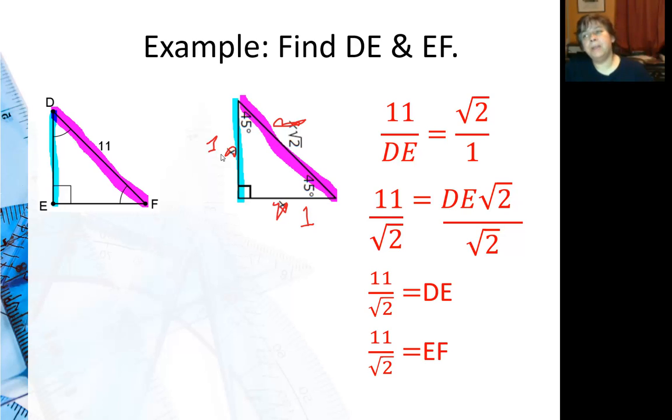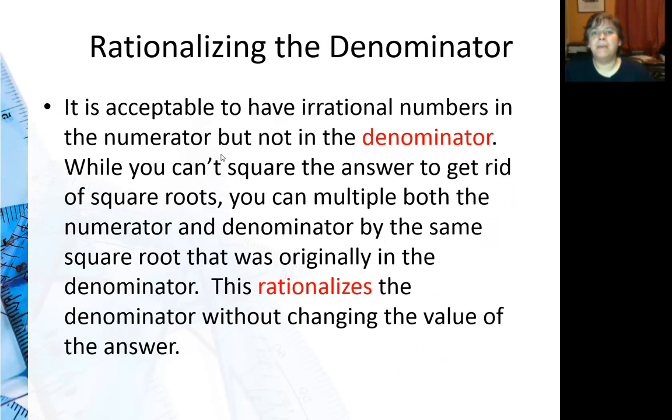So this brings up an interesting topic called rationalizing the denominator. In this answer my square root of two is in the denominator. Square roots are considered irrational numbers. And math teachers do not like square roots in the denominator. And there's some good reason for that. You're not going to run into it so much in geometry as in higher level math. So you can have irrational numbers in your answers. Just don't have them in the denominator.